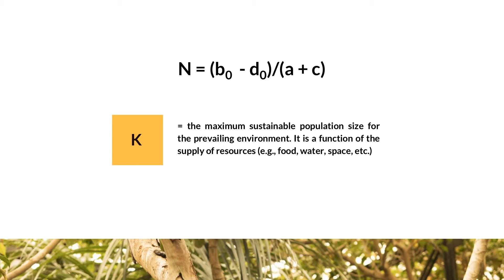Because B sub-zero, D sub-zero, A, and C are constants, this value of N represents a constant, or a single value at which B equals D, and the population growth rate is zero. We define this unique value, N, as the carrying capacity, which is represented by the letter K. The carrying capacity, or K, is the maximum sustainable population size for the prevailing environment.